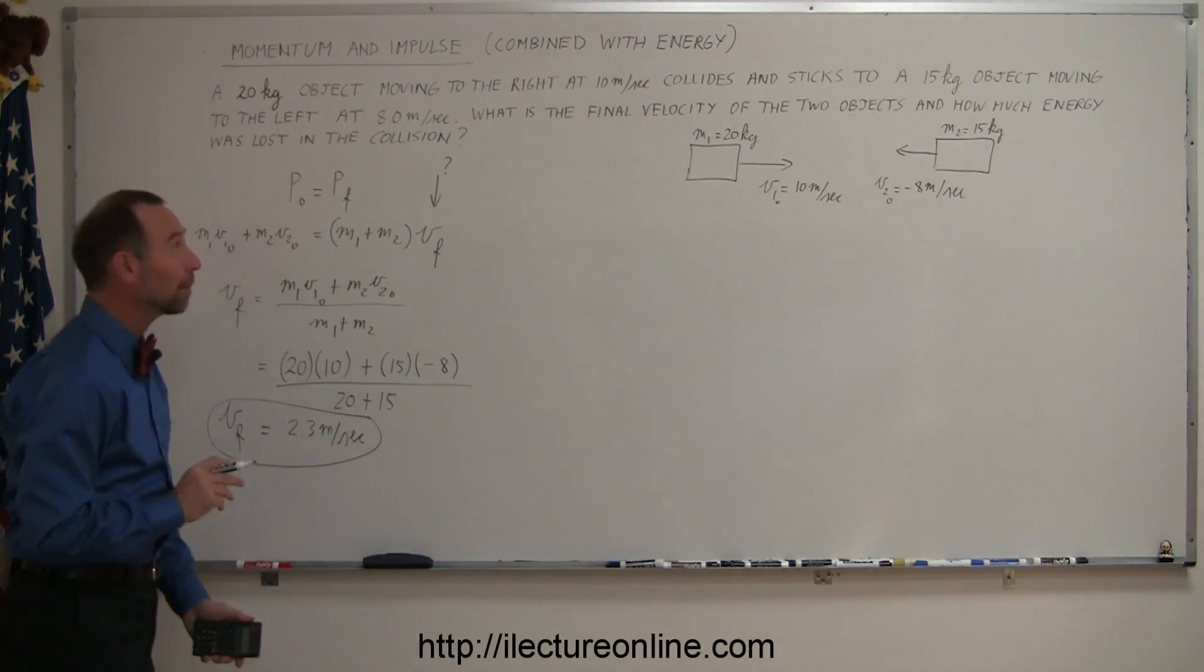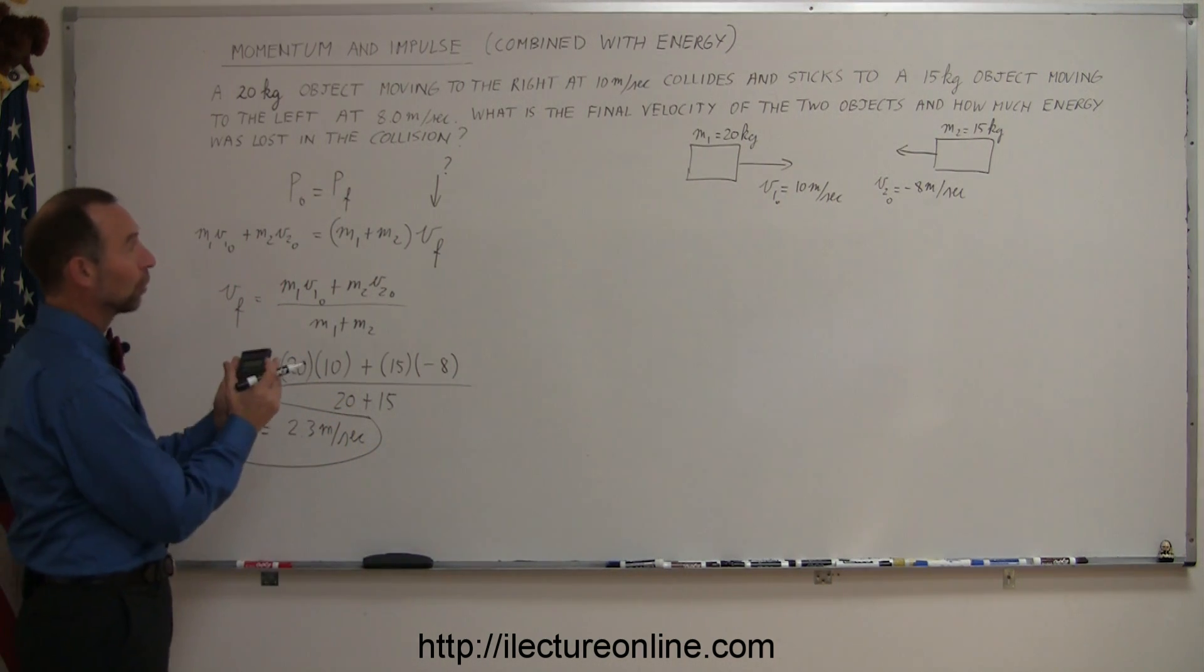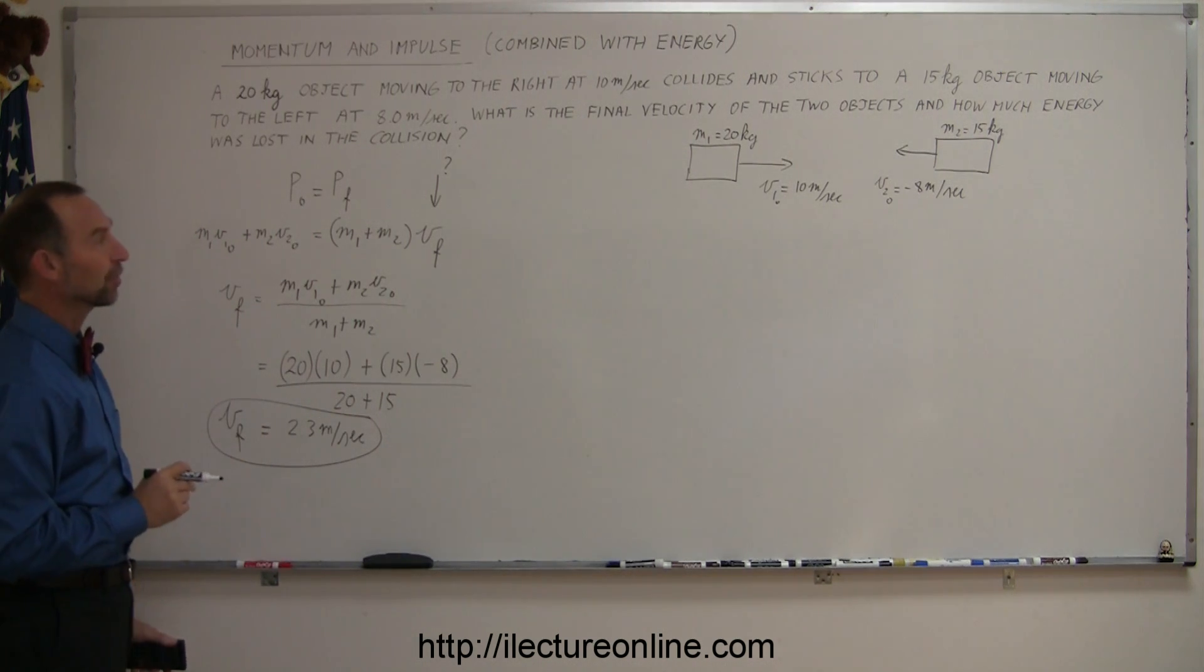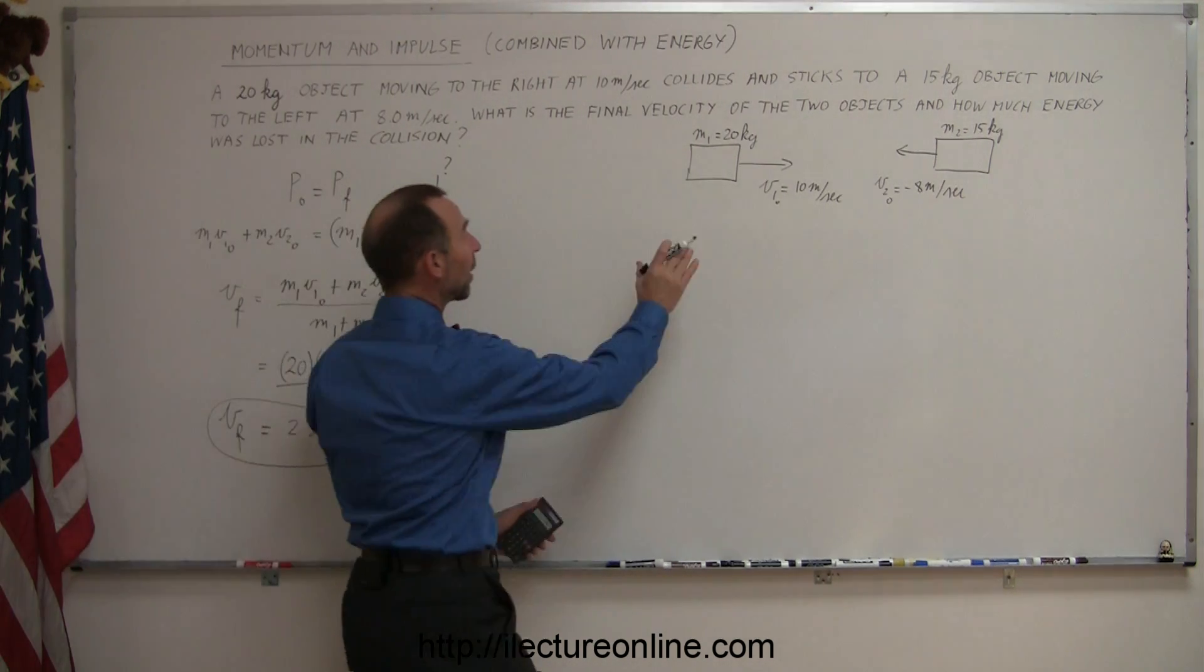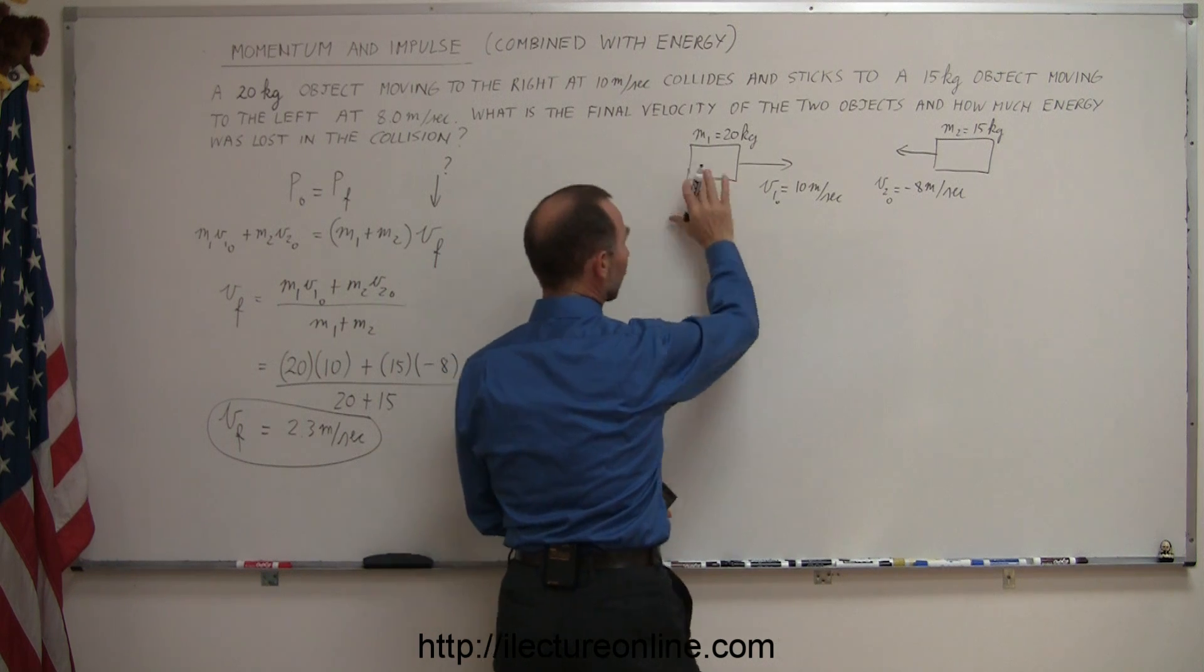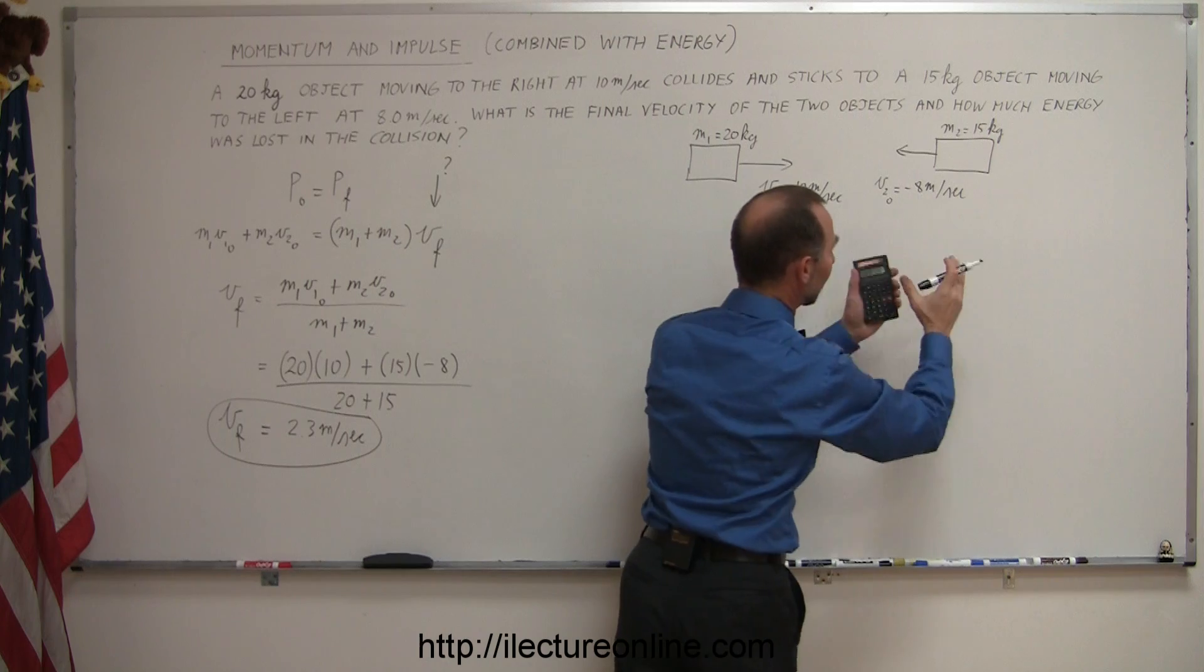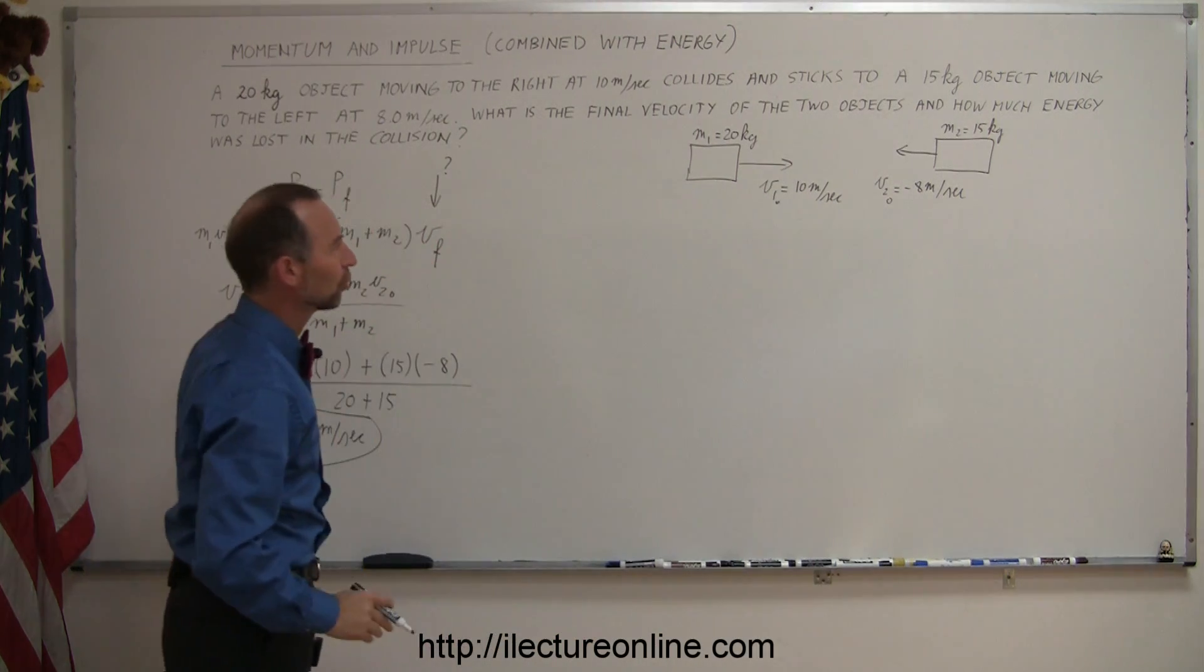So since the answer came out to be positive, that means that both will then still be moving to the right at some positive velocity, 2.3 meters per second, which means that the positive momentum of the first object to the right was bigger than the negative momentum of the second object to the left, so the end result is you'll still have a motion to the right.